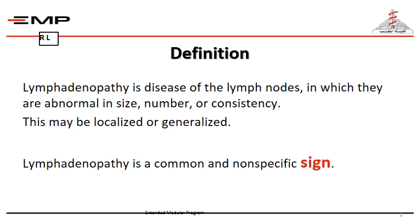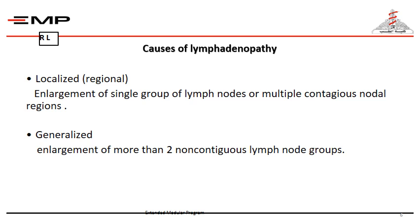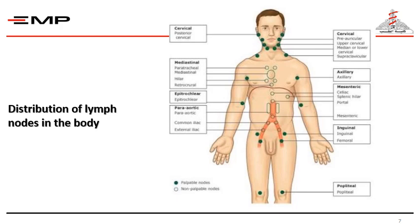What are the causes of lymphadenopathy? It can be classified into localized, or in other words regional, or generalized. In localized lymphadenopathy, there is enlargement of a single group of lymph nodes or multiple contiguous nodal regions. In generalized lymphadenopathy, there is enlargement of more than one non-contiguous lymph node group.